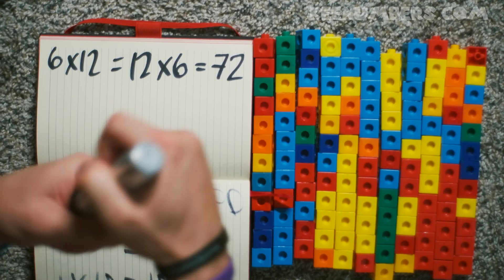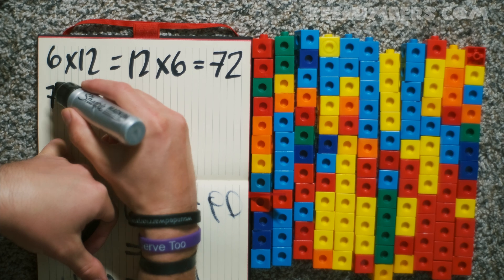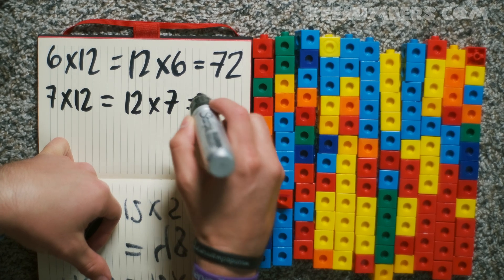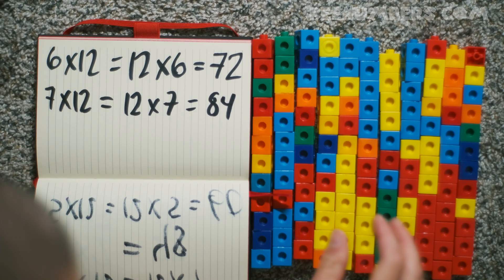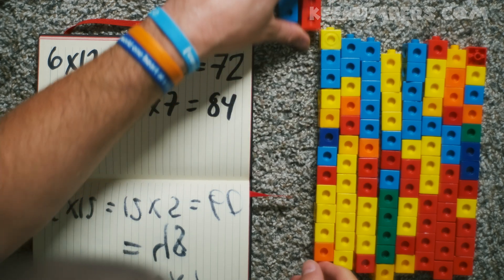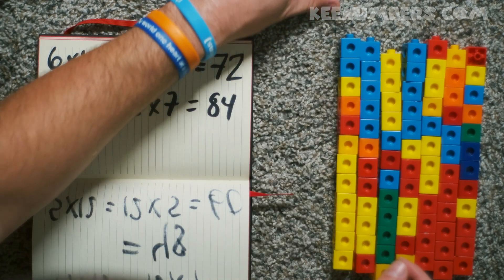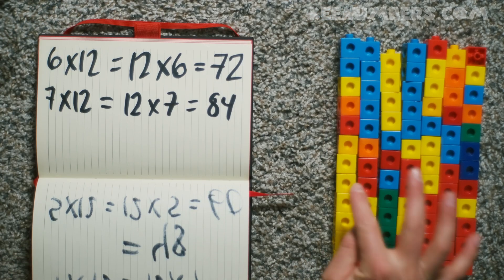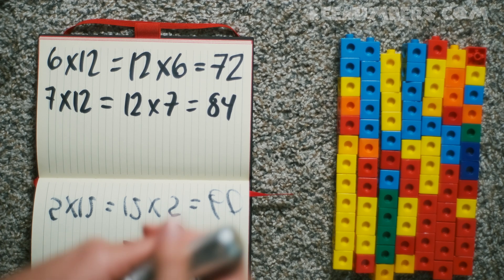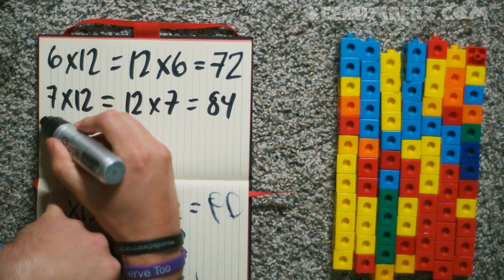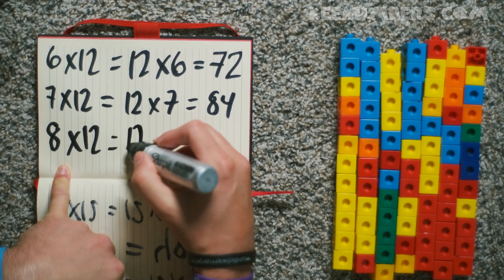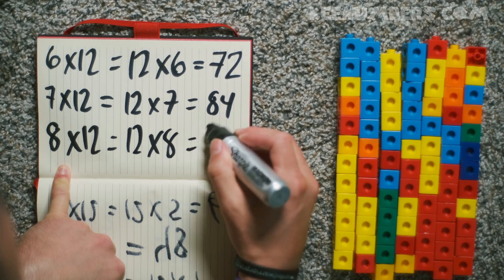How about 7 12s? That's the same thing as 12 7s. That's 84. Now let's do 8 12s — that's the same thing as saying 12 8s. That's 96.